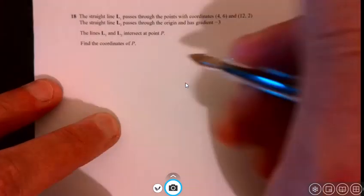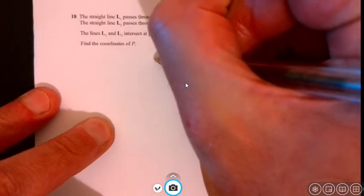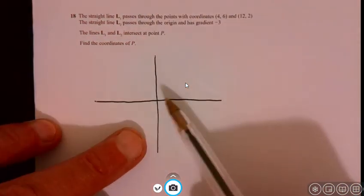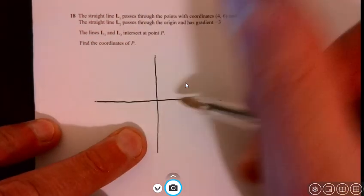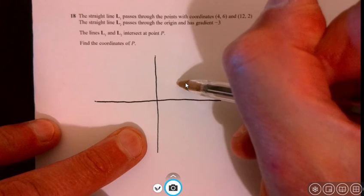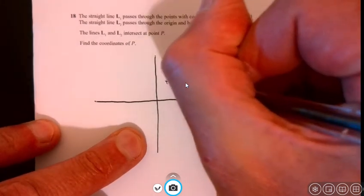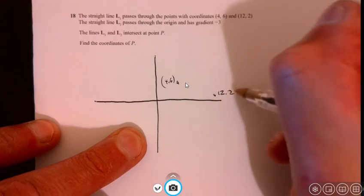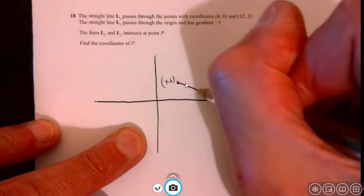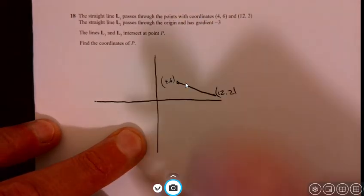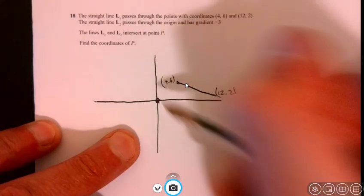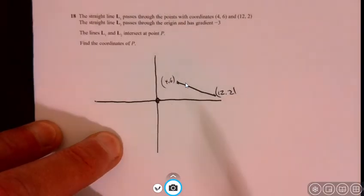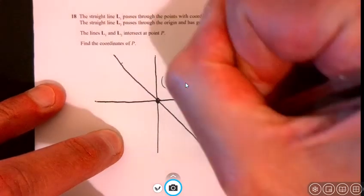Let's start off, let's just draw a very quick sketch. Sketches so often can just help us out, see what's going on. So we've got L1, goes through roughly 4, 6, which is about there. And then we've got 12, 2 over here somewhere. There we go. And we've got L1. And then L2, it tells me, goes through the origin, and then it's got a gradient of minus 3. That means it's kind of going like that somewhere. So stick that in there.